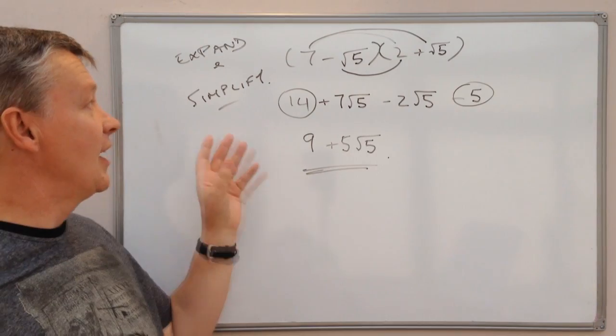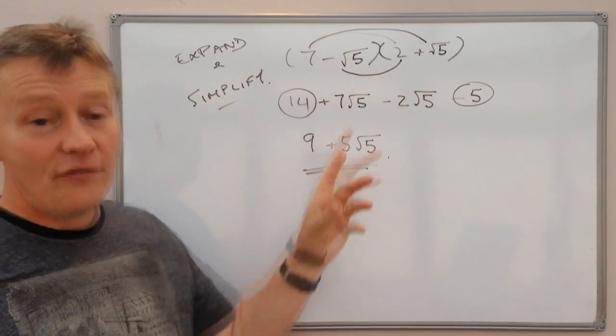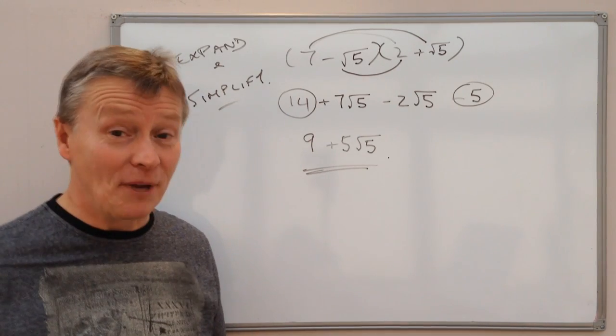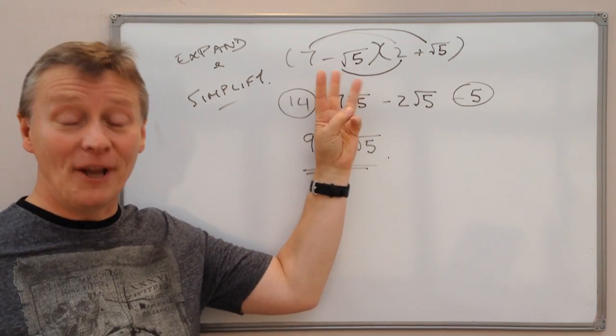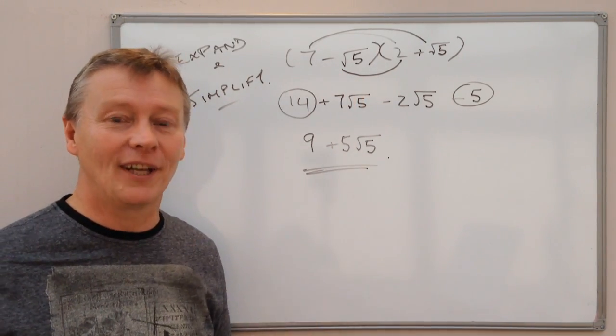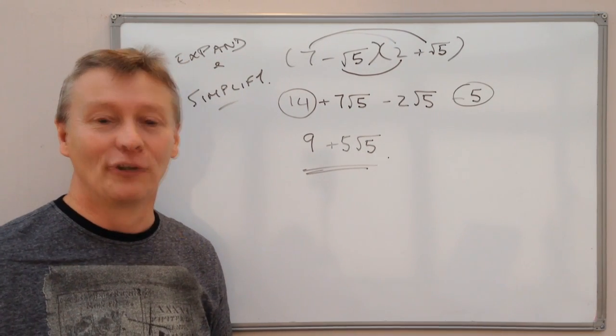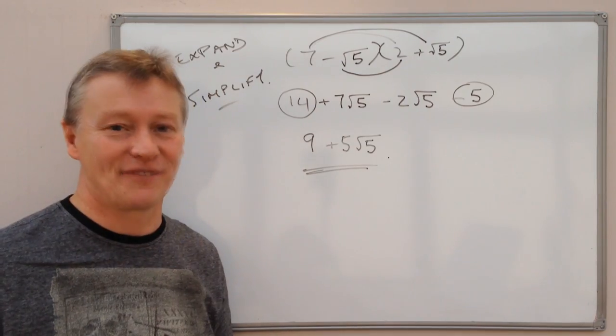Okay, and that would be the simplification of these two bracketed terms multiplied together. I hope that's been okay, this is 3 Minute Maths, that's the end of the playlist on dealing with surds. Please do add a comment below and I'll look forward to seeing you inside the next video.